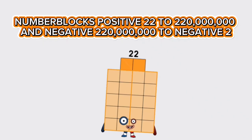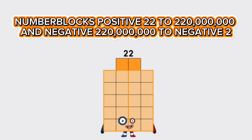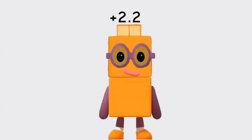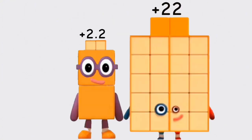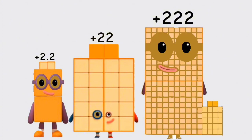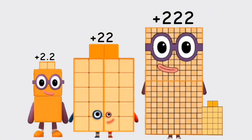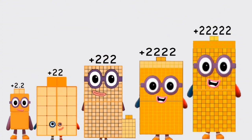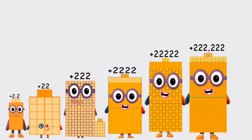Number blocks positive 2.2 to 220,000 and negative 220,000,000 to negative 2.2. Positive 2.2. Positive twenty-two. Positive two hundred twenty-two. Positive two thousand one hundred twenty-two. Positive twenty-two thousand one hundred twenty-two.